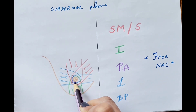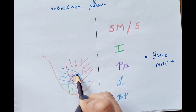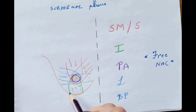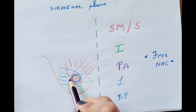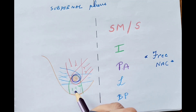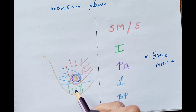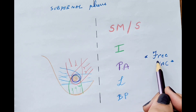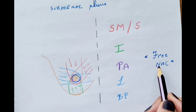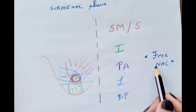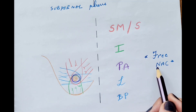If we consider the subdermal plexus and all the vessels around the NAC, we have a periareolar technique, taking contributions from all sides. In cases where the breast is very large and the reduction is so extensive that the length of the pedicles cannot support the NAC, a free nipple areola graft is used, which takes up like any other graft, and in that case we don't consider the pedicles.